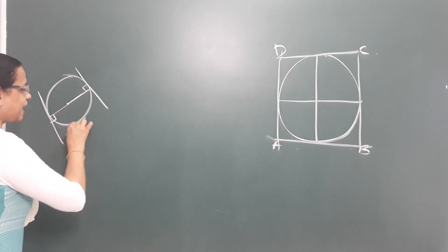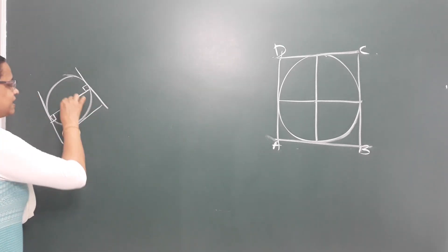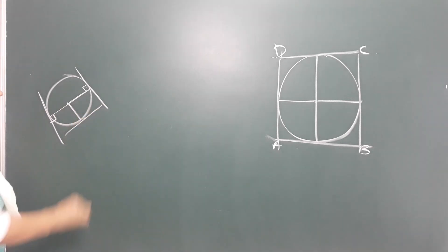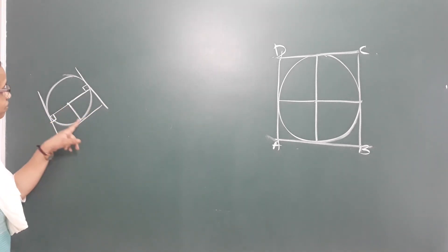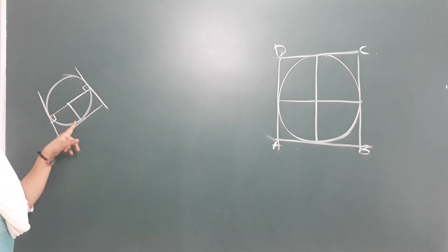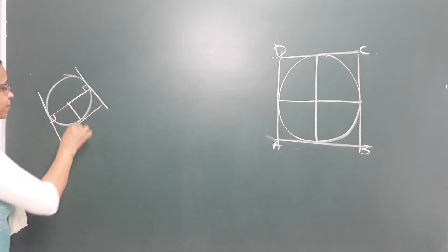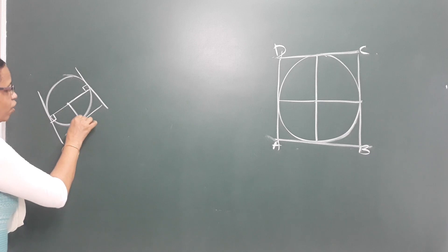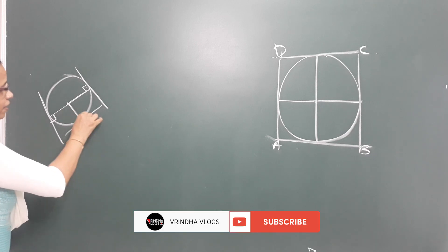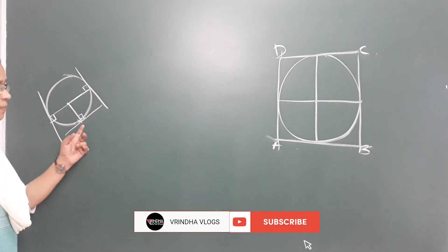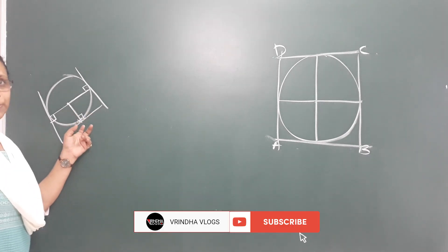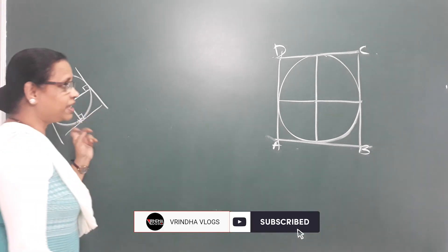What is the tangent? The radius is perpendicular at the point of contact. This is the theory we are learning.